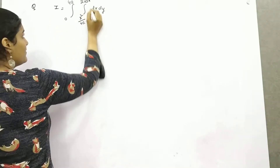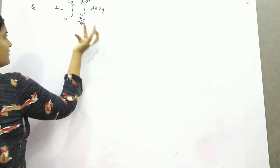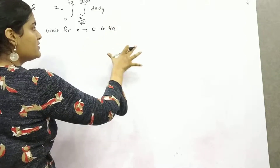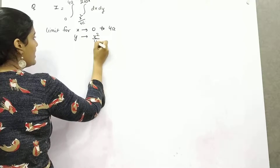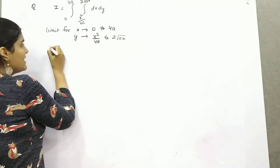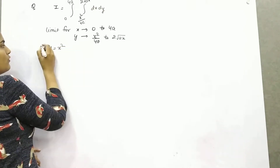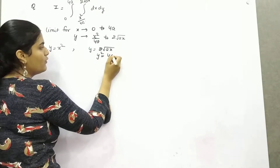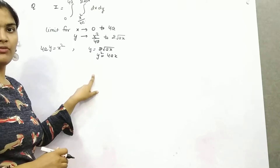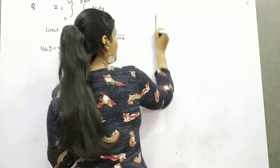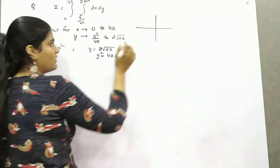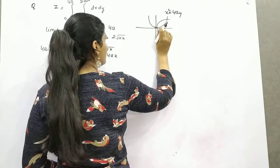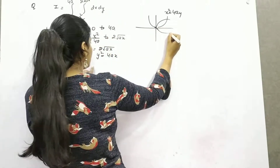You can see this is in terms of x, so this is the limit for y. The limit for x moves from 0 to 4a, and the limit for y is from x²/4a to 2√(ax). If y = x²/4a, then x² = 4ay, and if y = 2√(ax) then y² = 4ax. These are equations of parabolas.